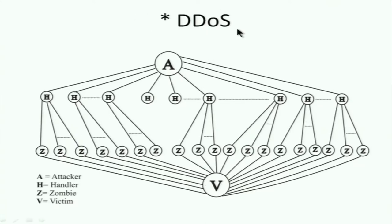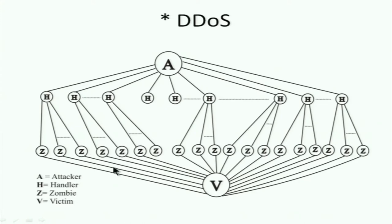You can make all of these attacks much worse using DDoS — distributed denial of service. Think of a botnet controller with handlers and zombies. Each of these zombies bombards the victim. You can have a pulsed or phased attack: this zombie bombards for some time, then another takes over, then another — in more or less random fashion. By the time you catch one, somebody else has taken over. So it's very difficult to find out who is behind the attack, because the flooding is distributed amongst many zombies.